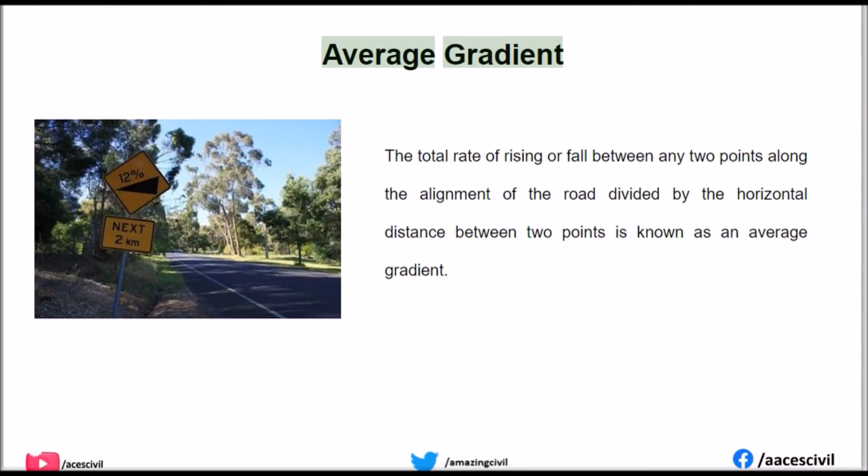Average gradient: The total rate of rising or fall between any two points along the alignment of the road, divided by the horizontal distance between those two points, is known as the average gradient.